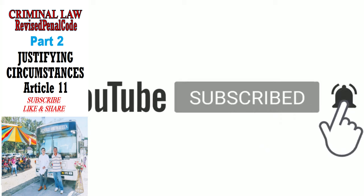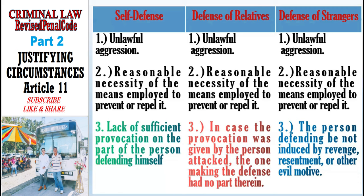We already mentioned in Part 1 that in Self-Defense under Paragraph 1, Defense of Relatives under Paragraph 2, and Defense of Strangers under Paragraph 3 of Article 11, the first and second requisites are the same: unlawful aggression, and reasonable necessity of the means employed to prevent or repel it. Only their third requisite differs. Let's start with Defense of Relatives under Paragraph 2.